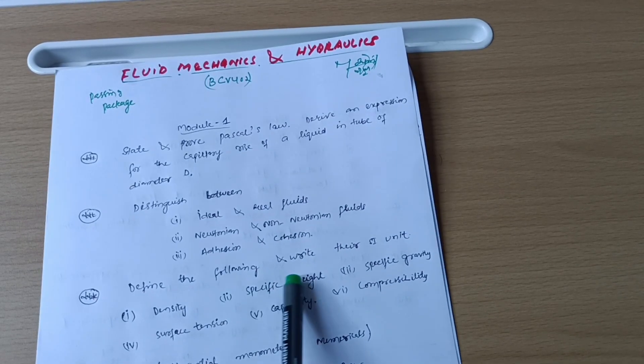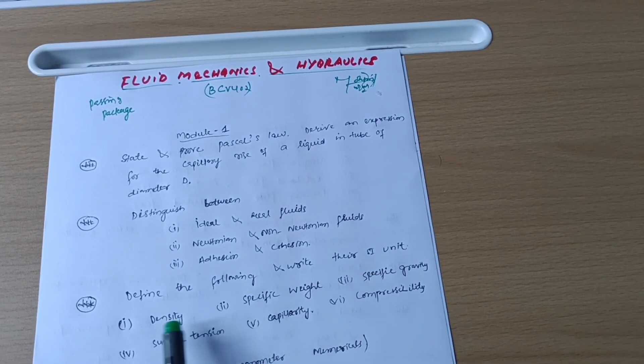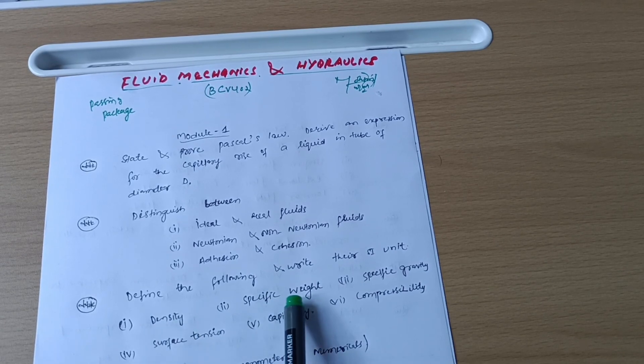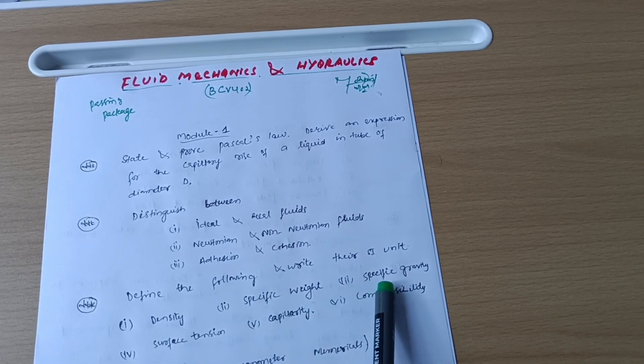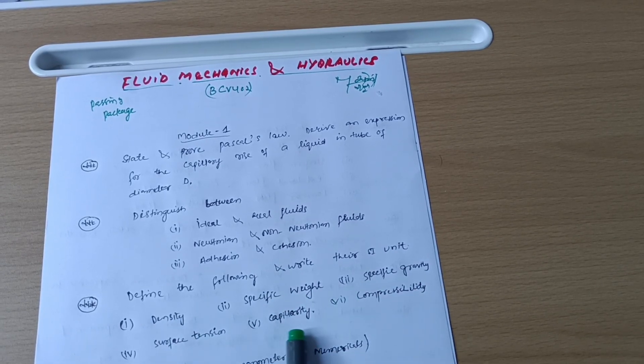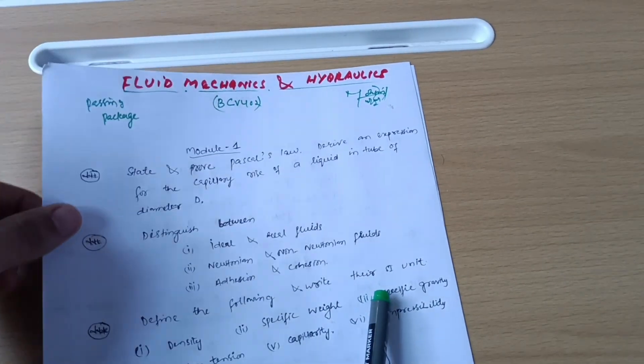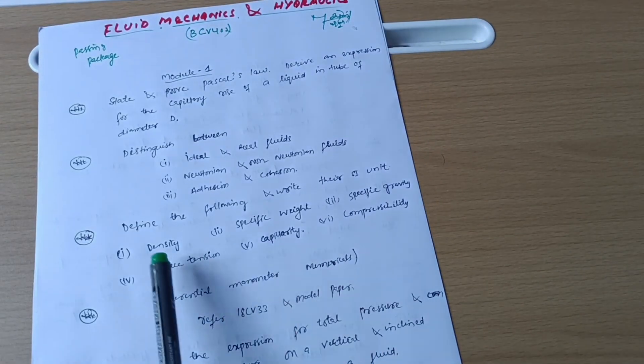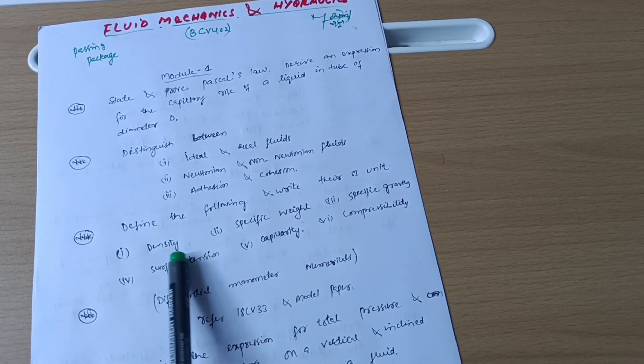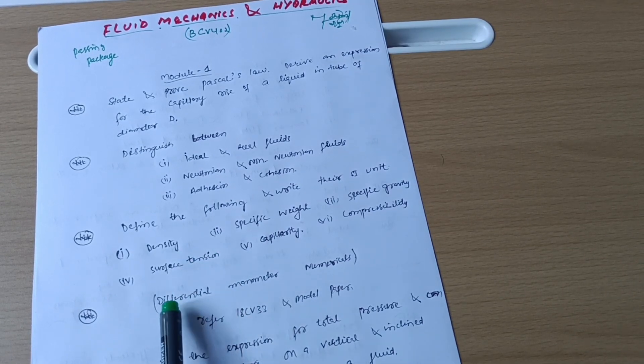Next is define the following and write their SI unit: density, specific weight. These are the properties of fluid. Specific gravity, surface tension, capillarity, and compressibility. So these are the definitions. Two to two lines are enough to write down. So two to two marks it may be there, or one to one marks each.